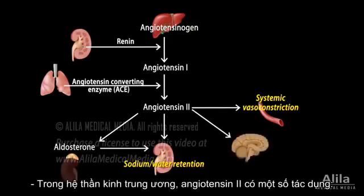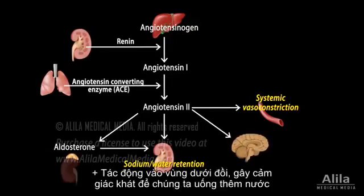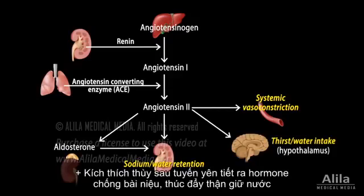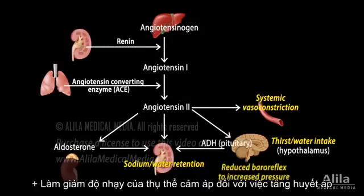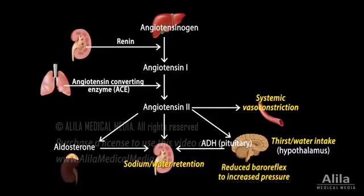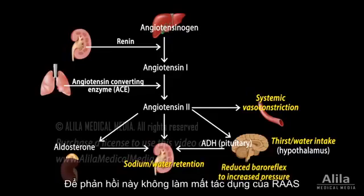In the central nervous system, angiotensin 2 has several effects. It acts on the hypothalamus to stimulate thirst and encourage water intake. It induces the posterior pituitary to release antidiuretic hormone, which promotes water retention by the kidneys. It reduces the sensitivity of baroreceptor response to increased blood pressure, so that this response would not counteract the effect of RAS.